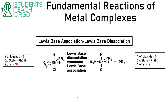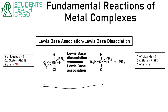It's important to note that in these reactions there are three criteria we're going to look at to determine what changed during the reaction: the number of ligands in the complex, the oxidation state of the metal, and the total number of electrons in the complex. This first reaction, going from left to right, is Lewis-base dissociation, and going from right to left would be Lewis-base association.